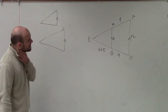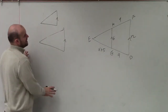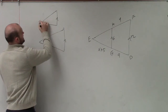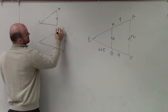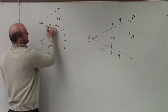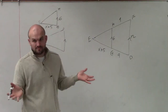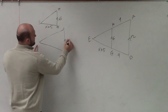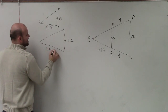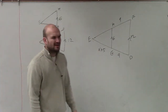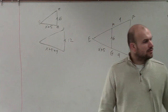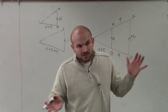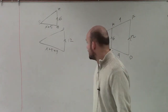So in this case, what we have for triangle EHG: we know that that length is 6, and this length is x plus 5. For the larger triangle, we have this is 12, and this is x plus 5 plus 9, which becomes x plus 14. Since they say that these are similar triangles, we know that they are proportional to each other — we just need to find the missing value for x.